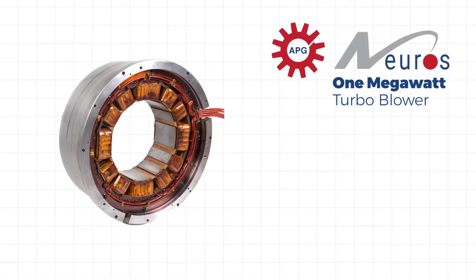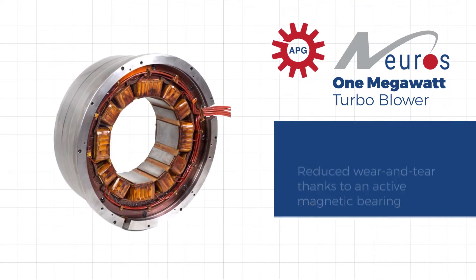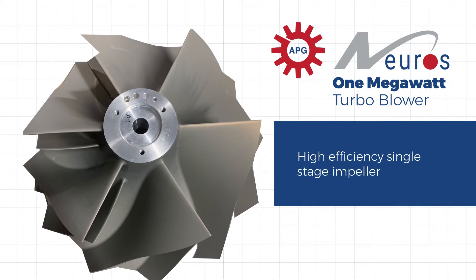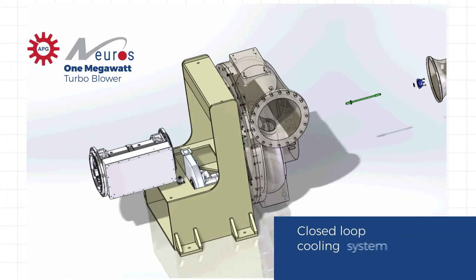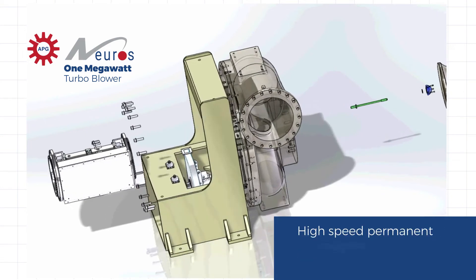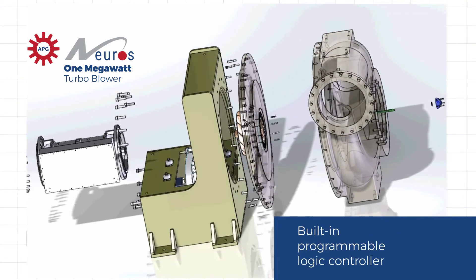The 1-megawatt Turbo Blower offers reduced wear and tear thanks to an active magnetic bearing, a high-efficiency single-stage impeller, high total air-to-wire efficiency, an integrated closed-loop cooling system, a high-speed permanent magnet synchronous motor, and a built-in programmable logic controller.